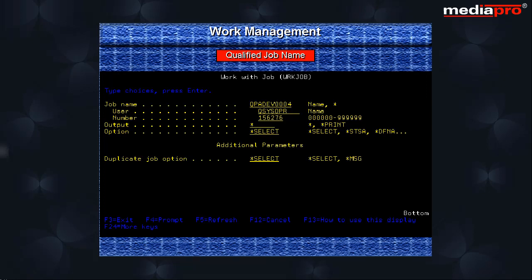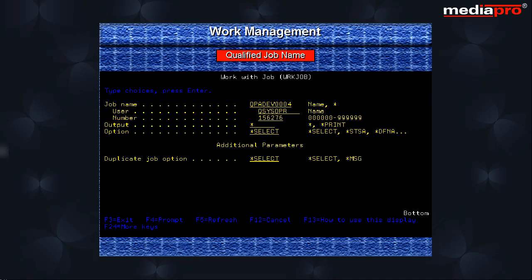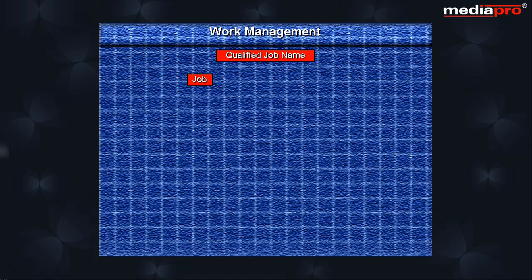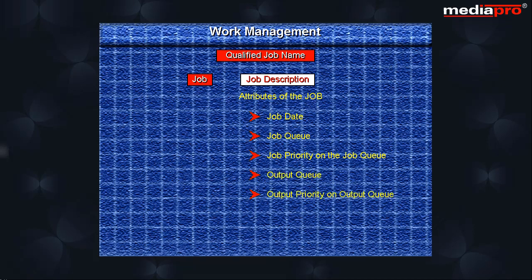When accessing a job, we can specify an entire job name as shown here, or we can specify only the job name and the user name, or only the job name would also do. Every job is associated with a job description, which is used to specify various attributes of the job that determine how the job will be run. In the job description, we can specify the job date, job queue, job priority on the job queue, output queue, output priority on the output queue, and the printer device that will be used to print the output.